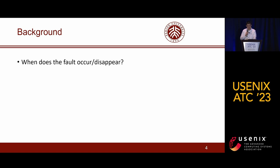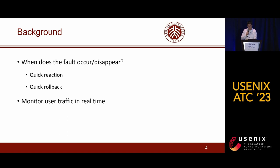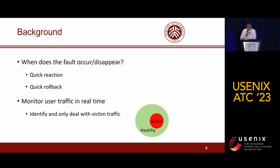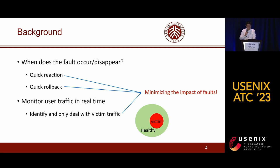The first question is: when does the fault occur and disappear? With such information, CSP can quickly react to reduce the packet loss rate when a fault occurs and execute a swift rollback when the fault disappears. This minimizes the impact of faults on cloud service. To answer this question, CSP should monitor user traffic in real time, distinguishing between victim traffic affected by network faults and healthy traffic, so they can deal with only victim traffic.